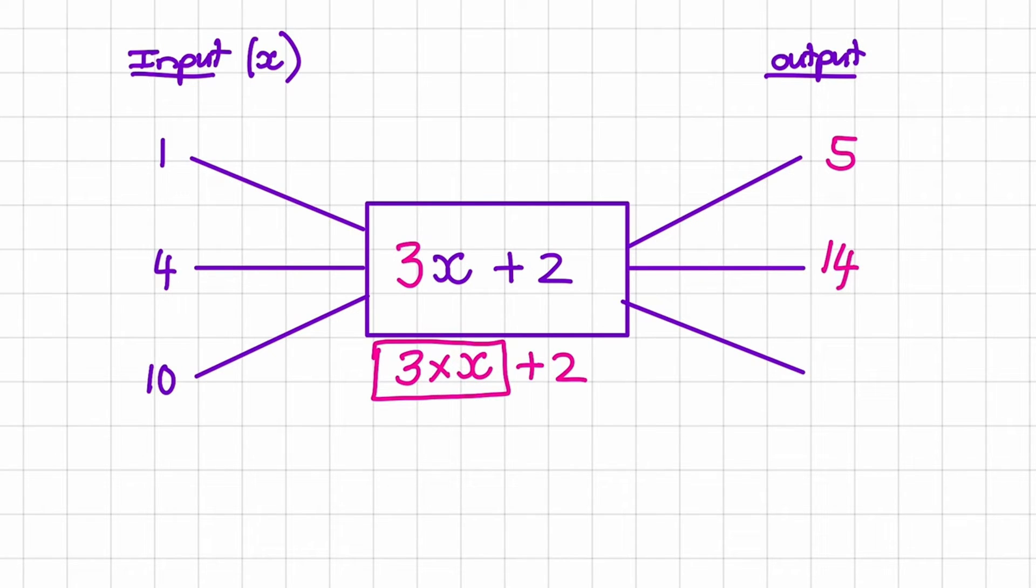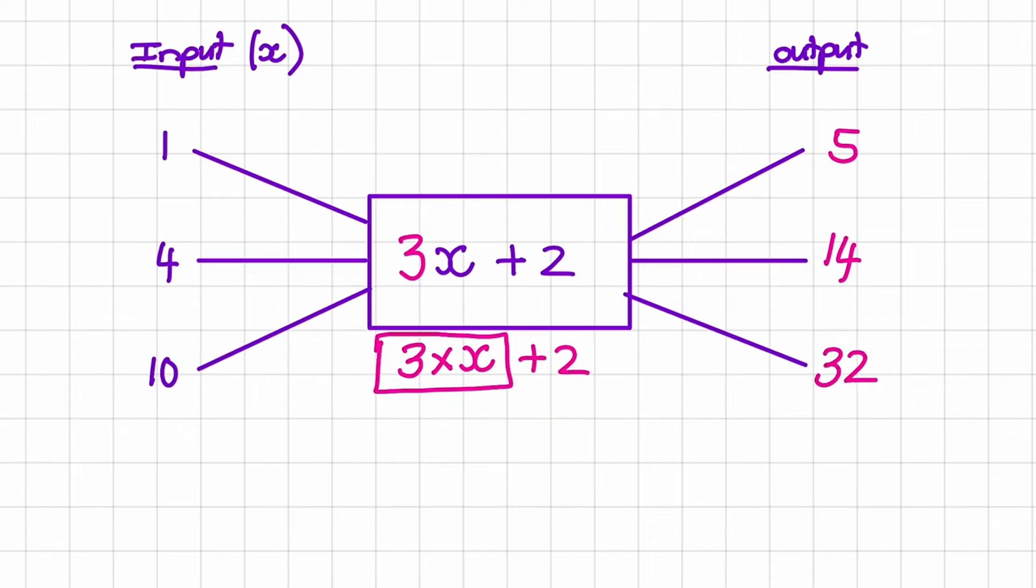And lastly we have 10. So again it doesn't become 310 plus 2. It means 3 times 10 which is 30 plus 2. So that answer is equal to 32. Now let us see how our output values would change when we add brackets.